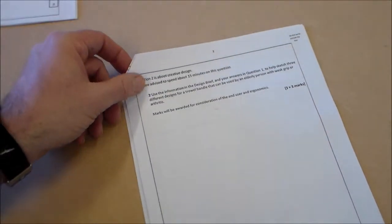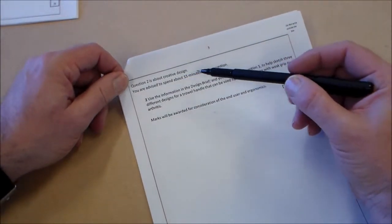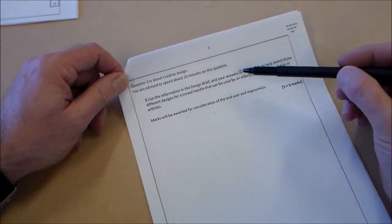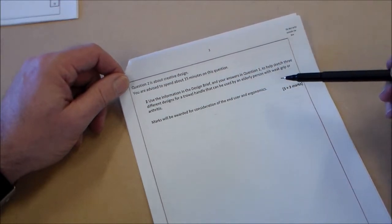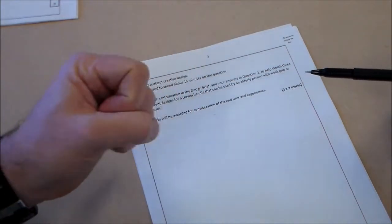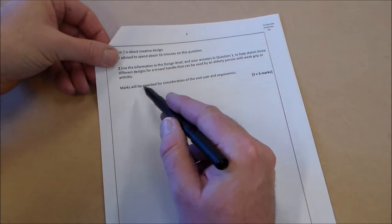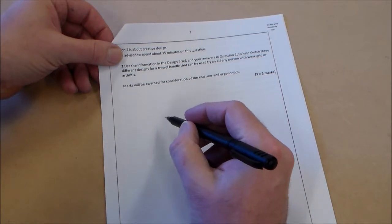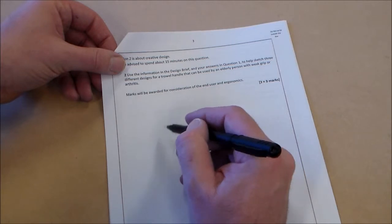So we're going to have a look on here first and we're going to produce some designs. Now this says question two is about creative design. You're advised to spend 15 minutes on this design. And it says, use the information in the design brief to help sketch three different designs for a trowel handle that can be used by an elderly person with a weak grip or arthritis. Arthritis is where it's difficult for people to grip things. So we're going to have a go at drawing these. It says marks will be awarded for consideration of the end user and ergonomics. So we could just draw the handles because that's what it said. If you just drew the handles, that would be fine.